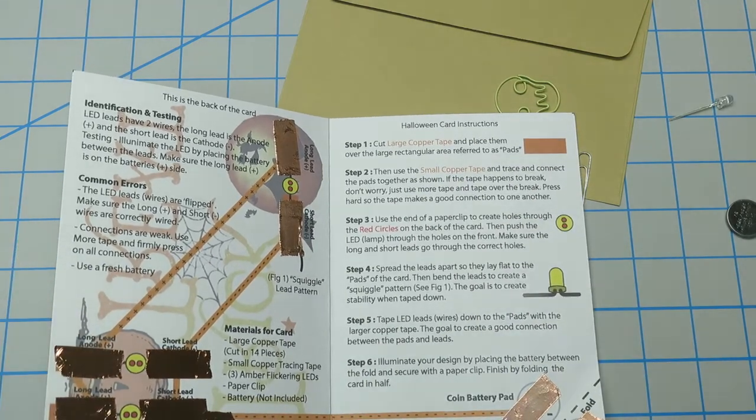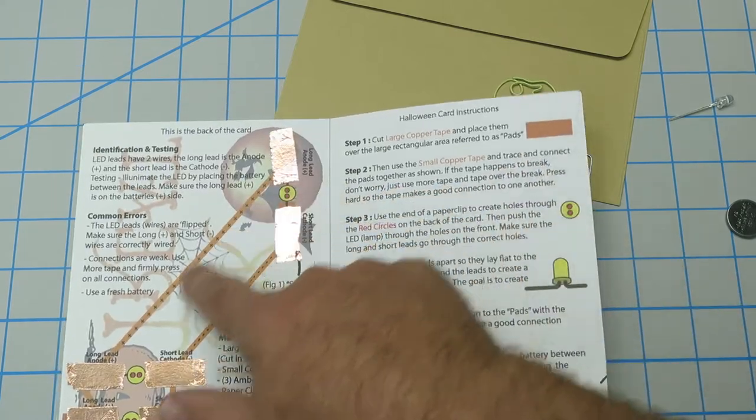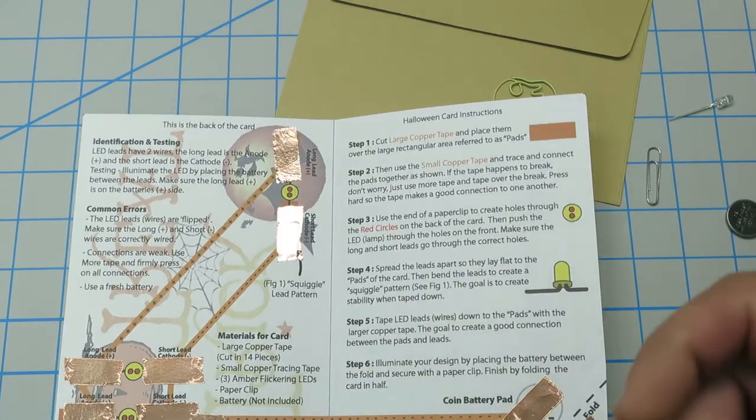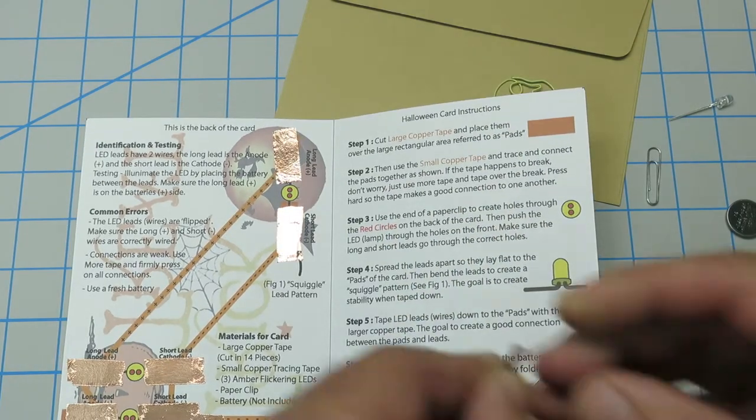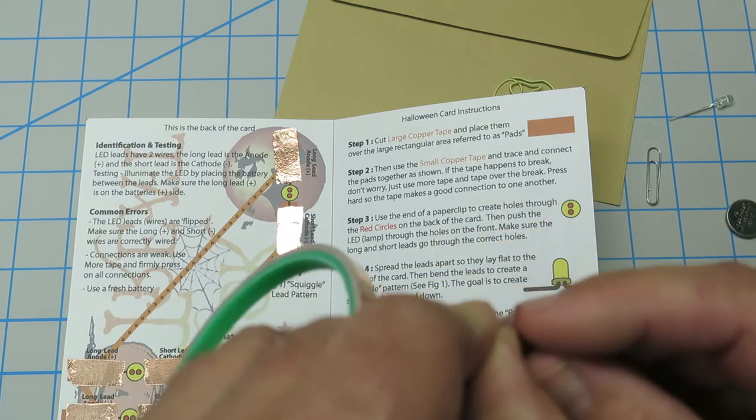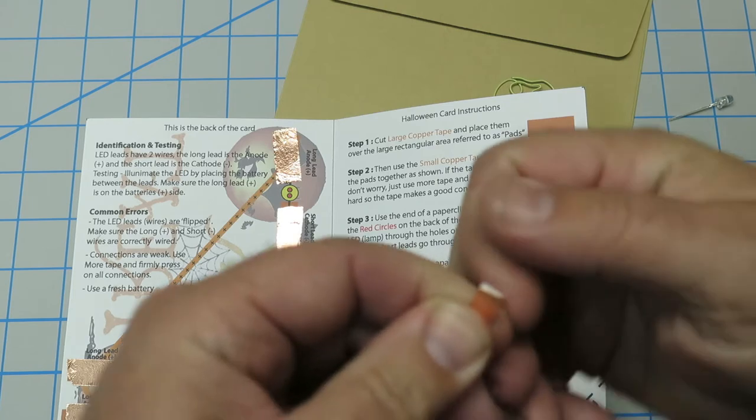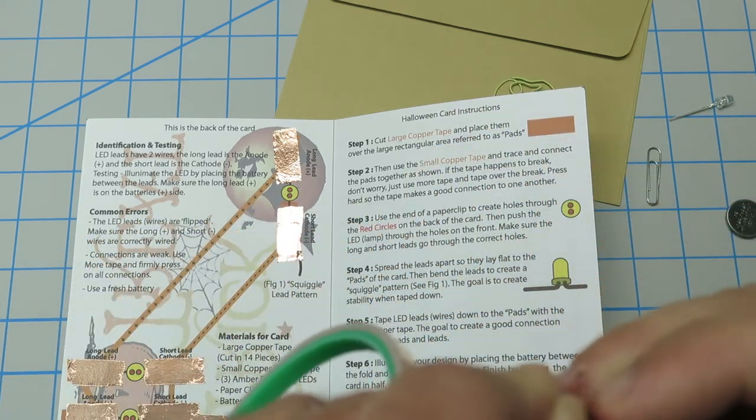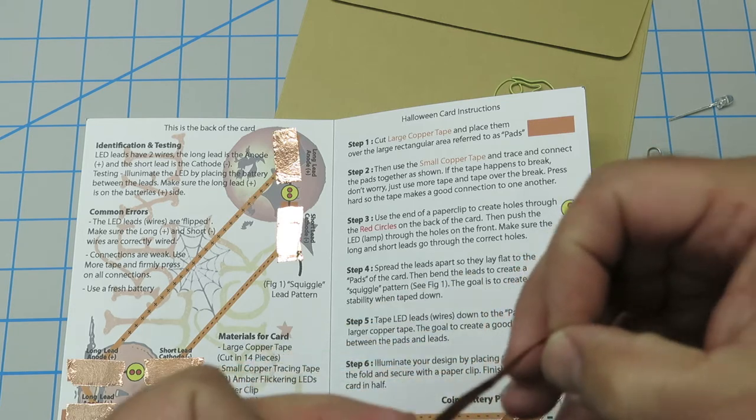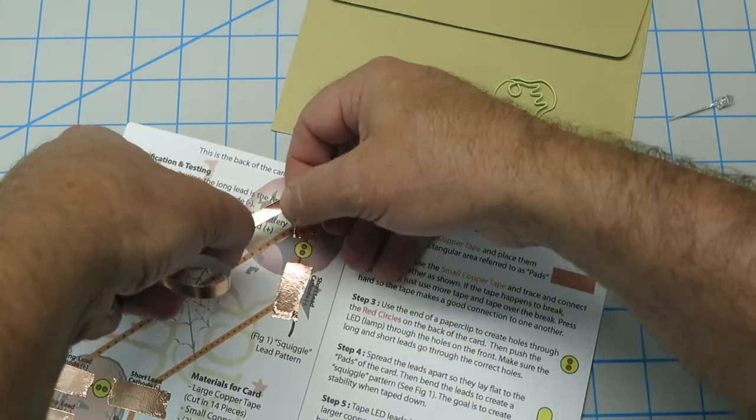So it says step one was put the copper pads down. I did. And then it says use the smaller tape and trace and connect the pads together as shown. Well, there it is. I'm going to connect them right there. And we said if the tape breaks, don't worry. Just use some more tape. And a little trick here, instead of trying to peel the tape from the bottom, peel it from the top because the bottom is a little thicker than the top.